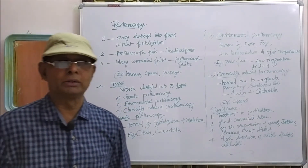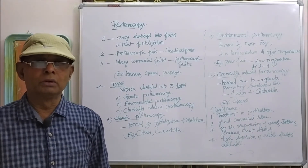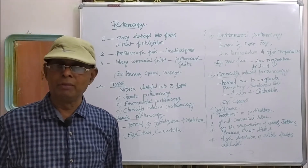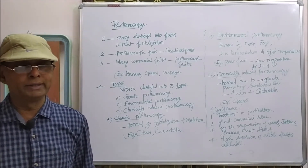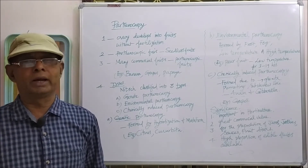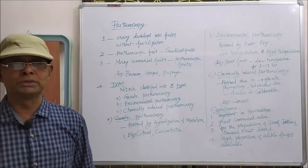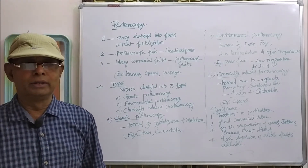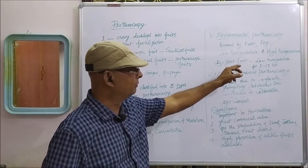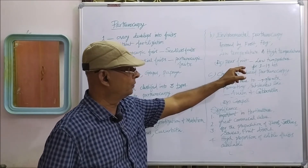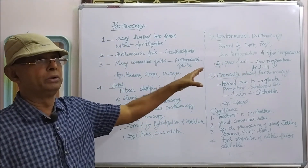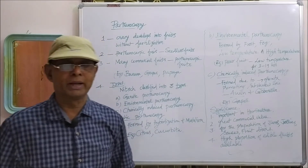The second type is environmental Parthenocarpy. Due to some environmental conditions, seedless fruits may be produced. Environmental conditions like frost, fog, low temperature, or high temperature can induce Parthenocarpy. For example, in the case of pear fruit, if you treat the plant with low temperature for 3 to 19 hours continuously, that will produce seedless fruits.